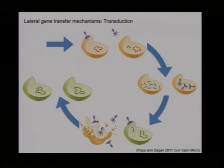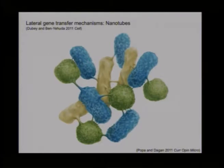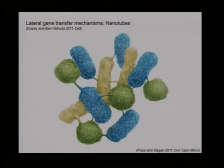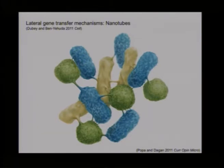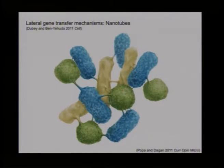I also want to present nanotubes — not yet a recognized mechanism but an architecture for gene transfer. Shown about two years ago by Dubey and Ben-Yehuda in a Cell paper, bacteria in the same colony, even from very different species, can connect between cells by membranous small tubes called nanotubes. They showed these nanotubes can transfer proteins, phage particles, and DNA, making them a potential architecture to propagate acquired DNA within a population.